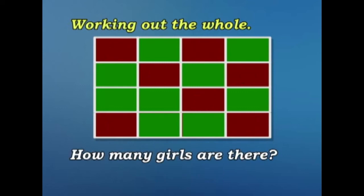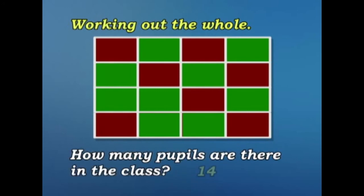How many girls are there? Let's count the green fractions. 1, 2, 3, 4, 5, 6, 7, 8, 9. 9 times 2? 18. So there are 14 boys and 18 girls.